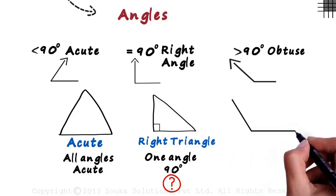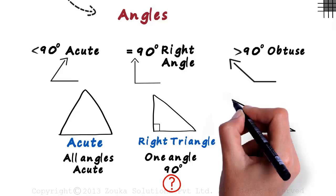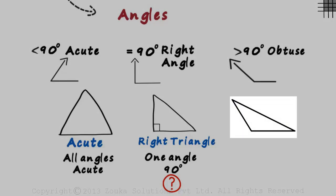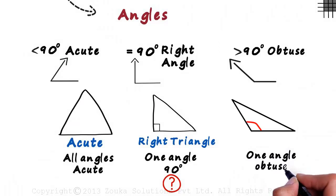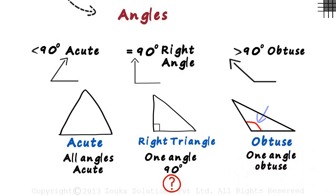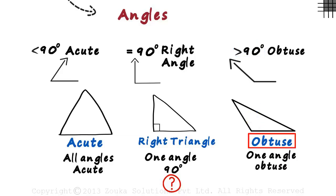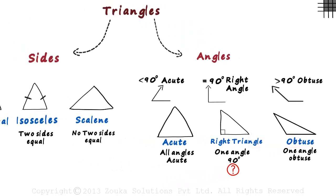The third kind of triangle looks a bit like this. If you observe carefully, you will see that just one angle is obtuse. A triangle in which one angle is obtuse is called an obtuse triangle. This angle in the triangle is greater than 90 degrees, which makes it obtuse.